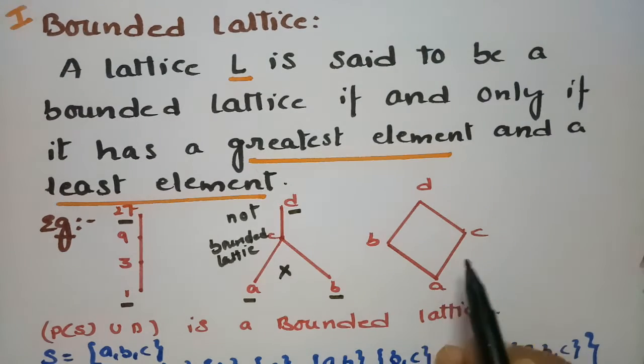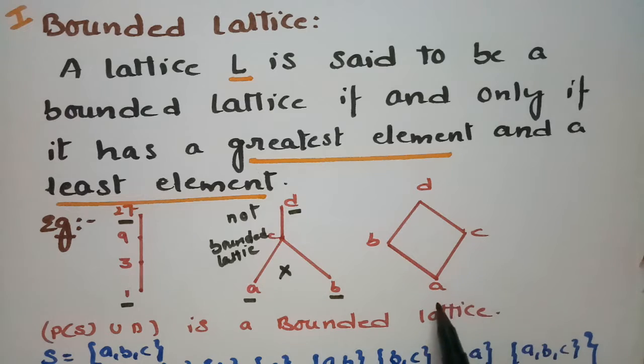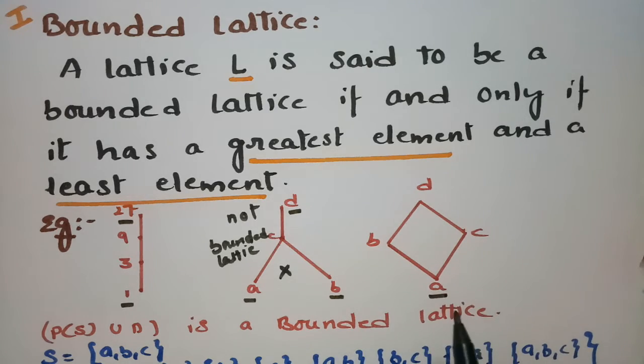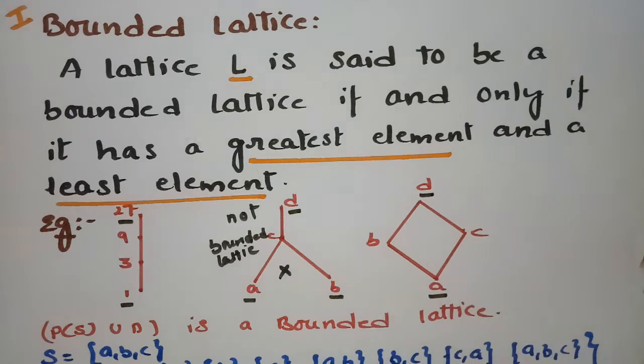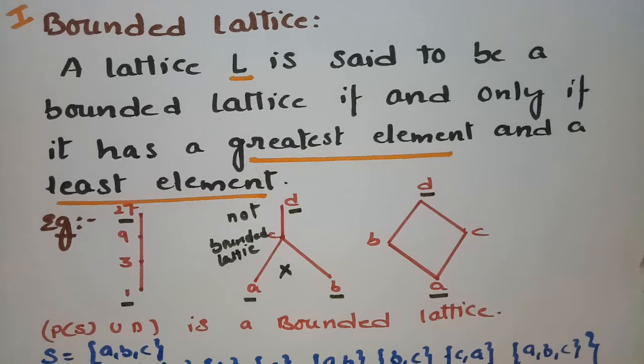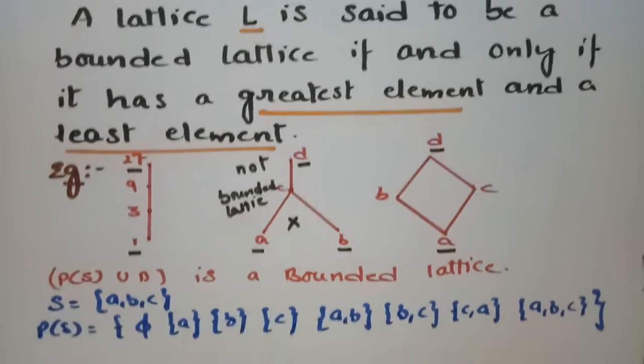For another example with elements A, B, C, D: this lattice has a single least element A and greatest element D, so this is a bounded lattice.